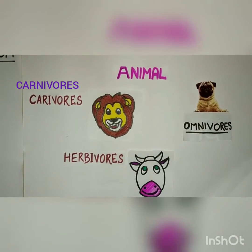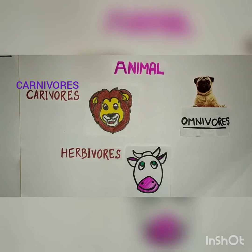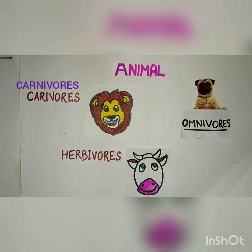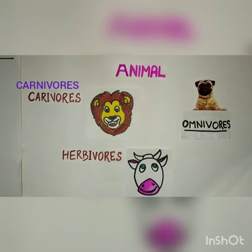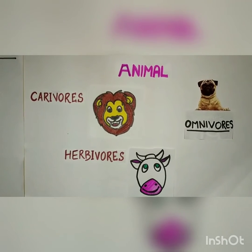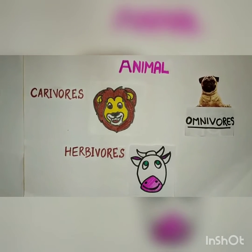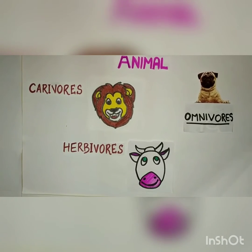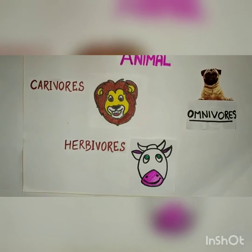Omnivores are those animals who eat both other animals and also plants, for example dog, cat, humans, bear etc.